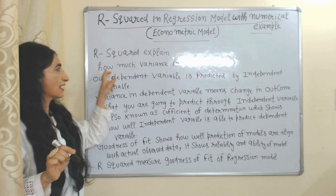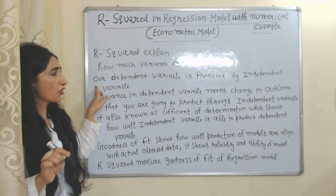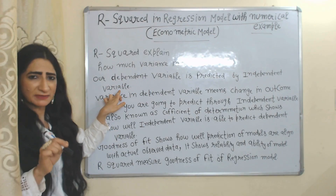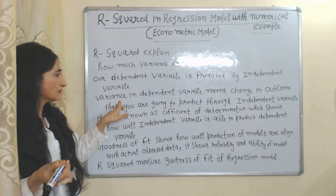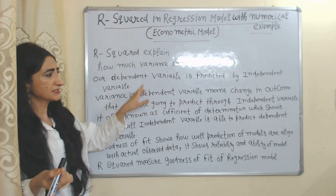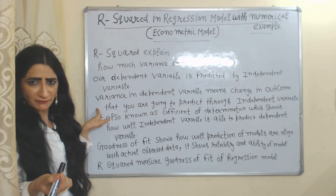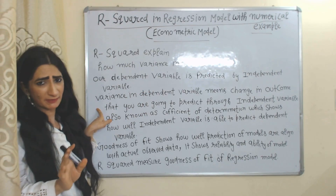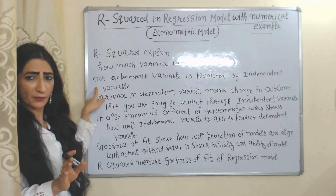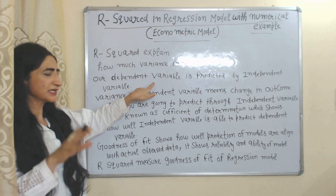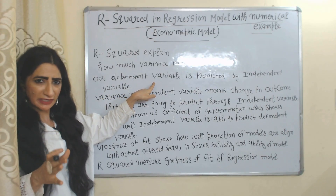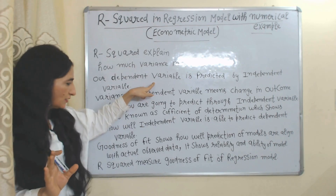We can say that R-squared explains how much variance in our dependent variable is predicted by the independent variable. Variance in the dependent variable means the change in the outcome of the dependent variable which you are going to predict through the independent variable — how well your independent variable is able to predict your dependent variable.